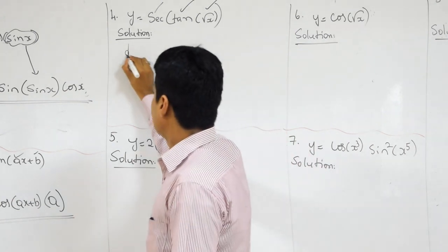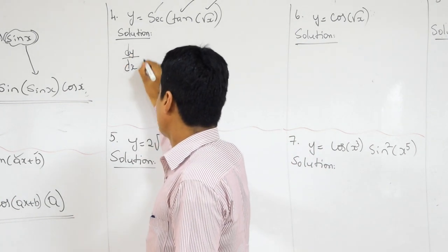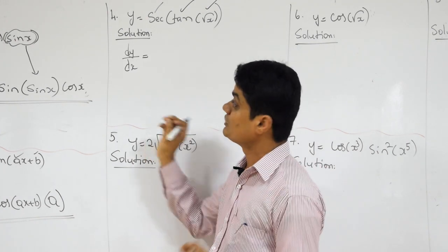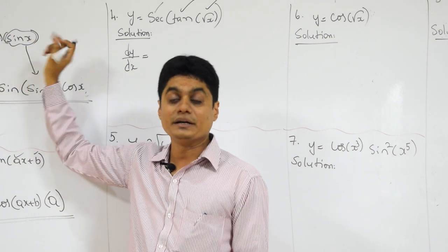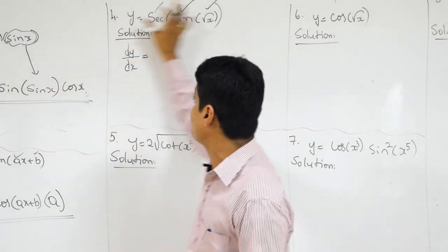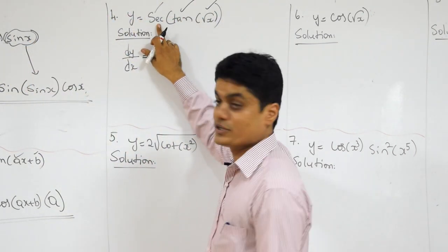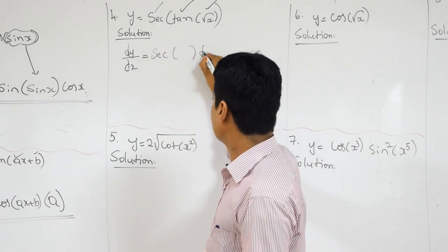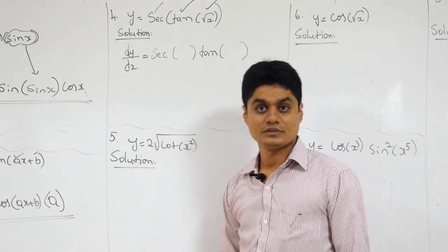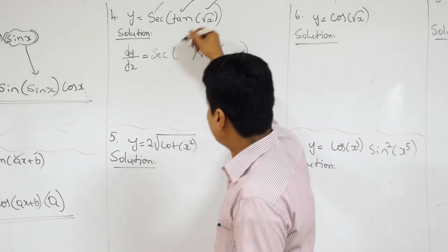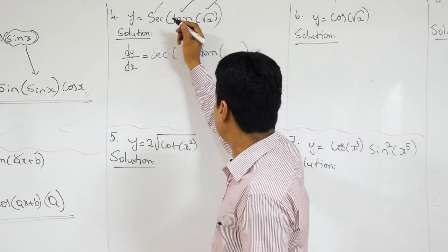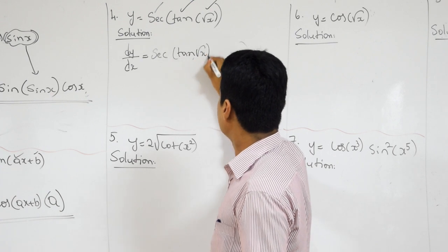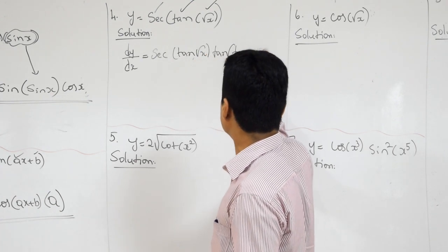What is the logic? First, you always have to differentiate the outermost function. Here, a better word is outermost — because if we have three different functions, which is the outermost function? Secant. What is the differentiation of secant? Secant X into tan X. Whatever is inside secant X, it will come as it is — that is tan of root X into tan of tan root X.